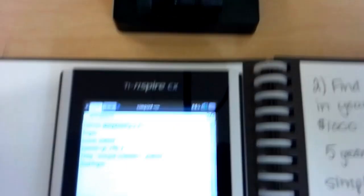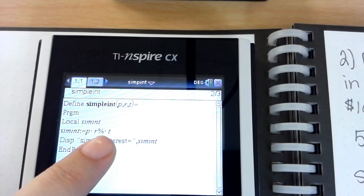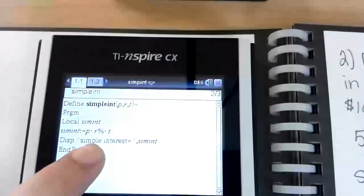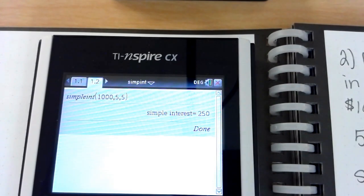Again we want to double check our program is the correct equation. The simple interest is the principal times the rate percent times time. Again we're going to enter the P, the r, and the t. The r does not have to be changed, it is going to be figured as a percent in the calculator. So use control over to get to your problem.